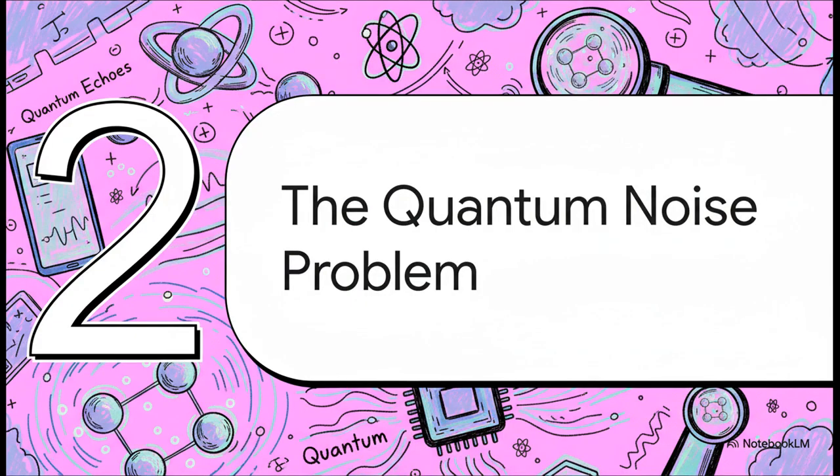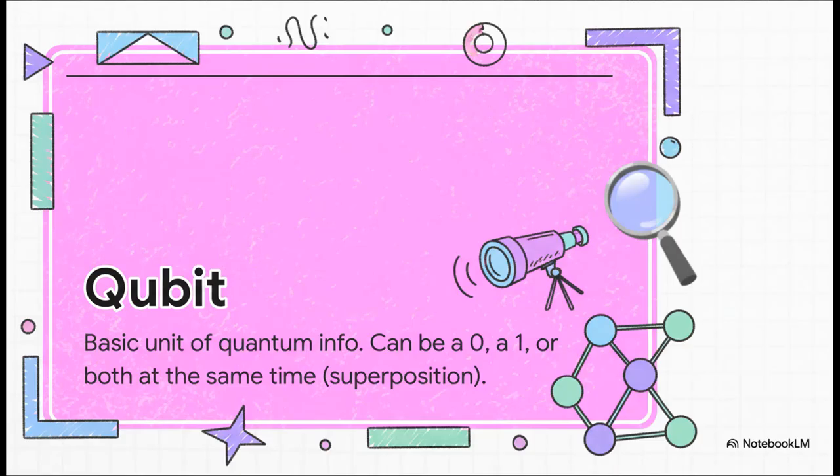So why has this been so incredibly difficult until now? Well, it all boils down to one massive problem that has haunted this entire field, quantum noise. And to understand that, we got to start with the absolute basic building block of a quantum computer. This whole idea of being in multiple states at once, superposition, that's the magic trick. It's where a quantum computer gets all its incredible power, letting it explore this vast landscape of possibilities all at the same time.